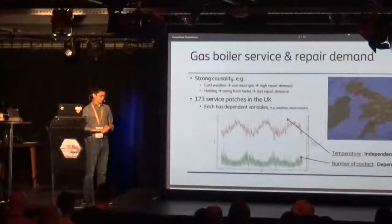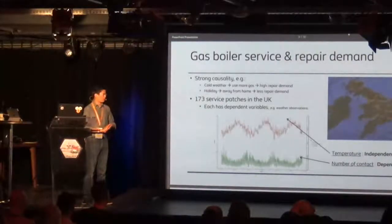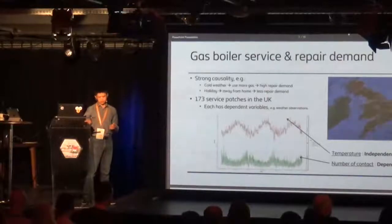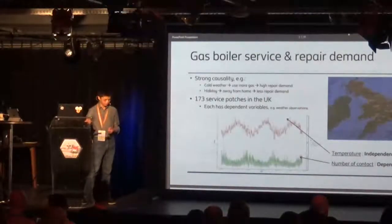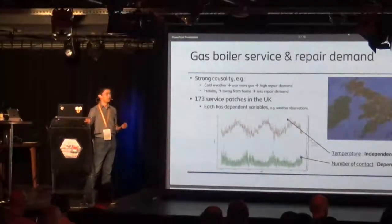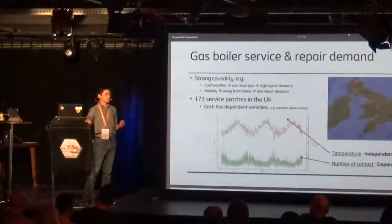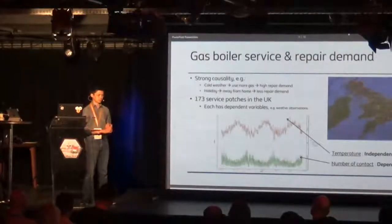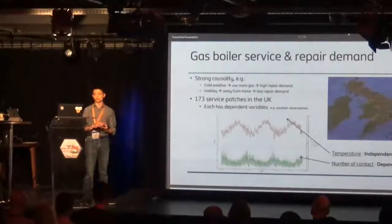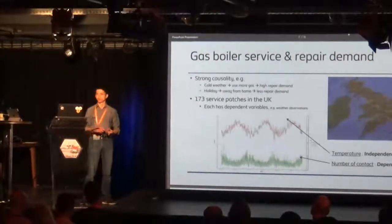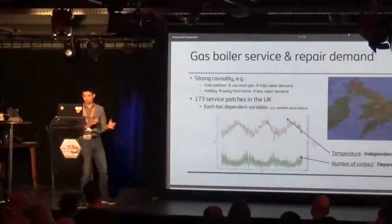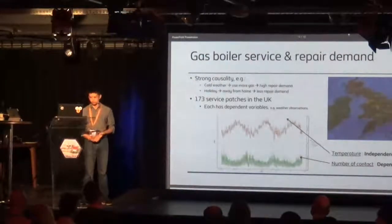Gas boiler breakdown demand is heavily correlated with certain features. For example, cold weather: when the weather is cold, people obviously use more gas, and if they use it more, then it breaks more — so there's clearly some causality there. We take those things into account.